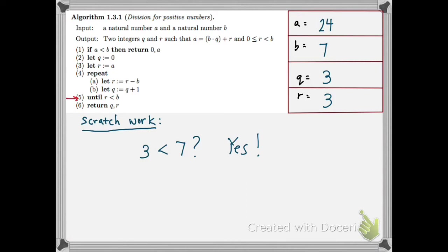which is the return statement. I'm going to return the current values of Q and R. So Q is 3, and R is 3, and the algorithm is done.